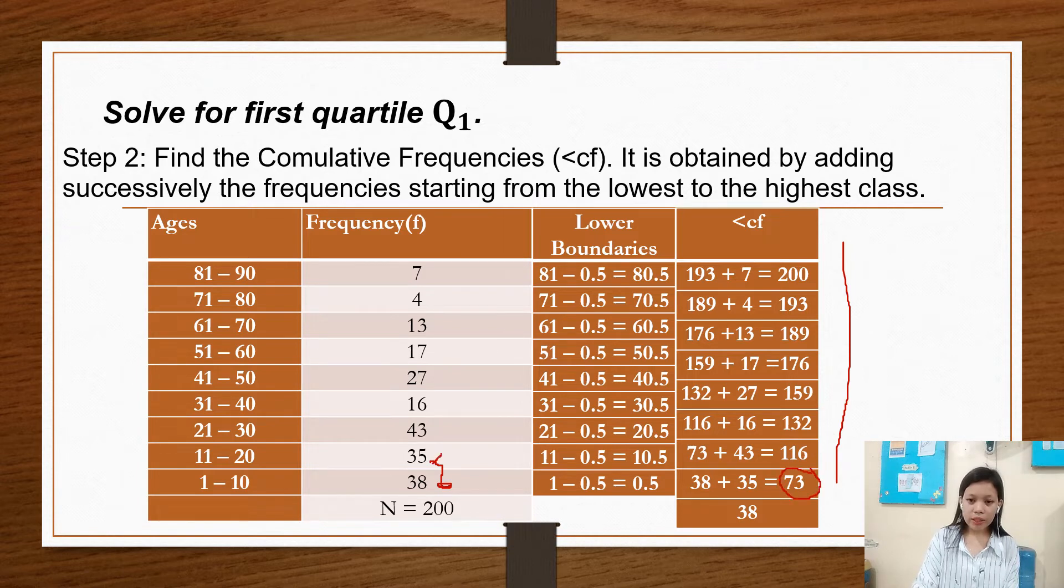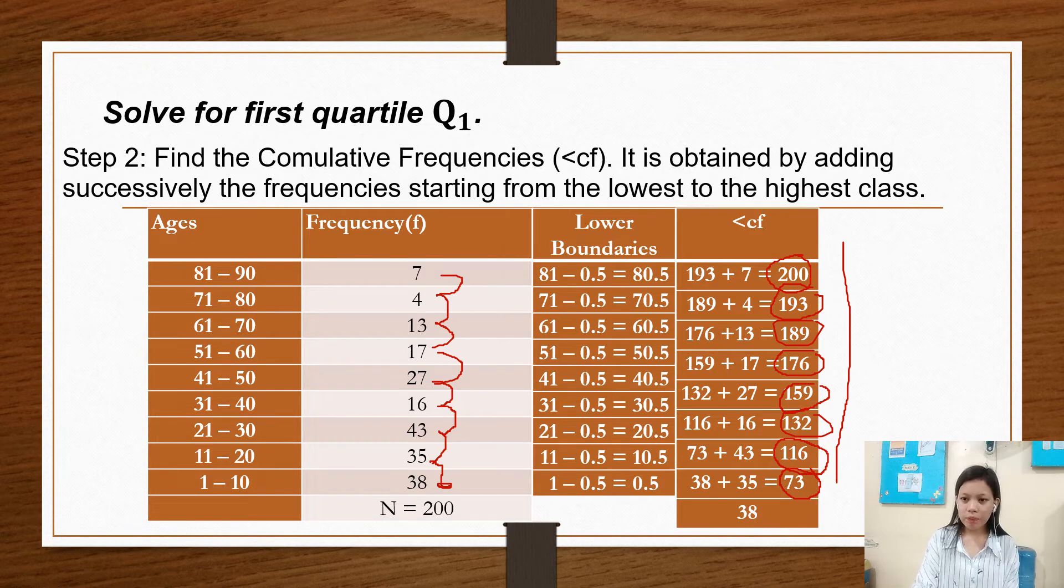And 73 plus 43 equals 116. And 116 plus 16 equals 132. 132 plus 27 equals 159. 159 plus 17 equals 176. 176 plus 13 equals 189. 189 plus 4 equals 193. And 193 plus 7 equals 200. So our cumulative frequency is by adding successively from lowest to the highest class.